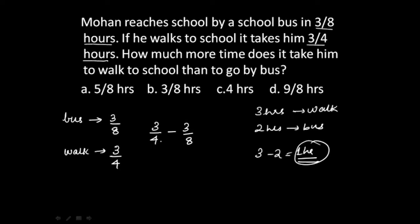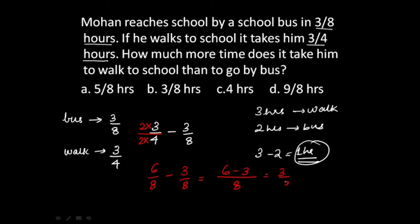We need to make the denominator common. We multiply the numerator and denominator of 3/4 by 2, so it becomes 6/8. Now we have 6/8 minus 3/8, which equals (6 minus 3)/8 = 3/8 hours. The correct answer is option B: 3/8 hours.